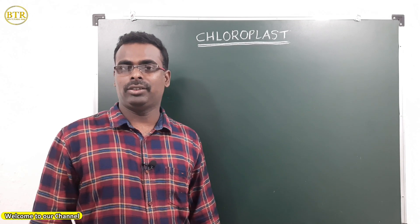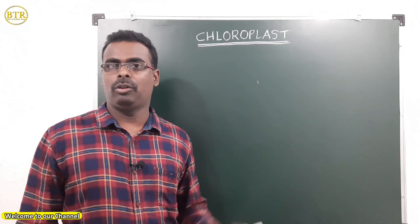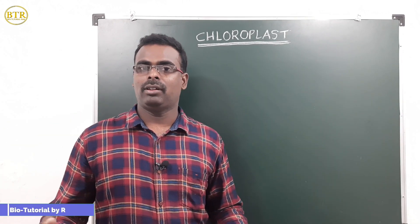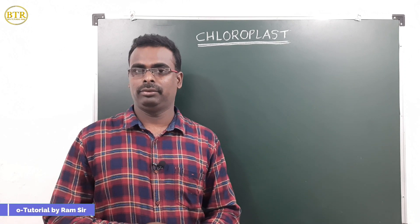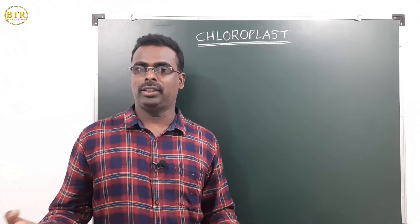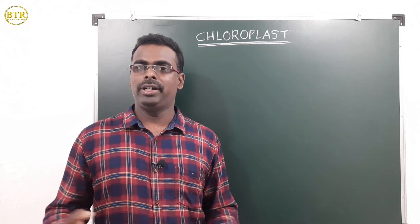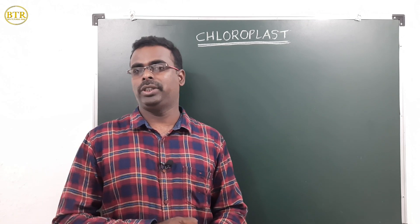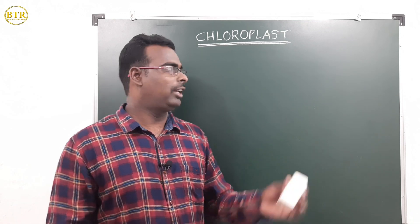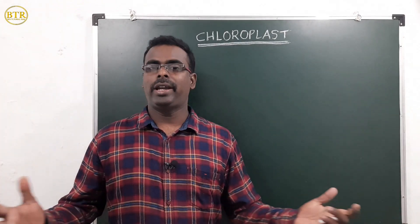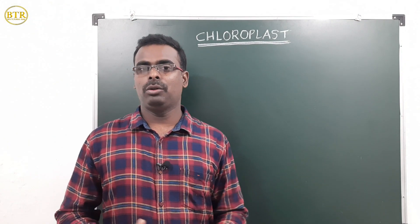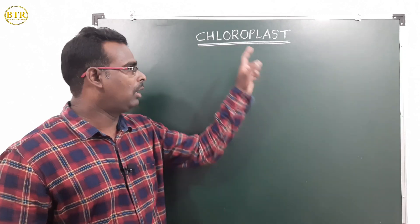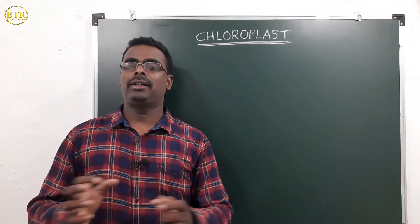Hi children, let us study about the chloroplast. Till now, various scientists conducted experiments on photosynthesis — what is the importance of photosynthesis, where did it occur? Now let us study about the chloroplast. Scientists wanted to know about photosynthesis, and for that purpose they had to separate the chloroplast from the plant cell.